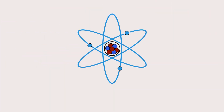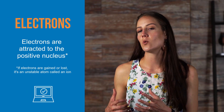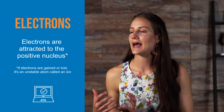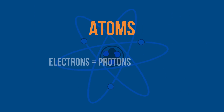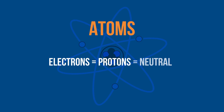Orbiting the atom's positively charged center are particles with a negative charge called electrons. The electrons are attracted to the positive nucleus, but they can escape their orbit by an outside force. Atoms have a certain number of electrons orbiting the nucleus. If the number of electrons is equal to the number of protons, the overall electric charge of the atom is neutral.